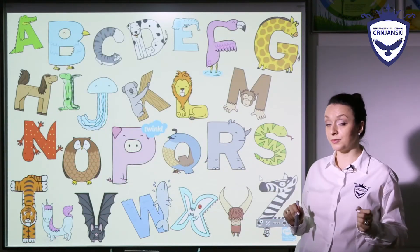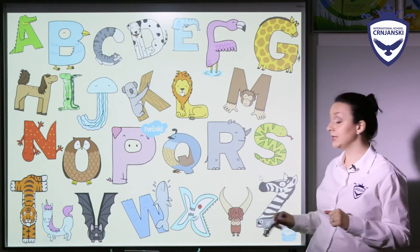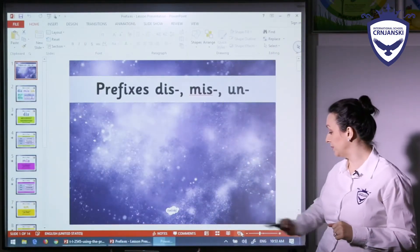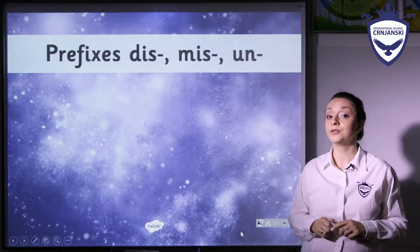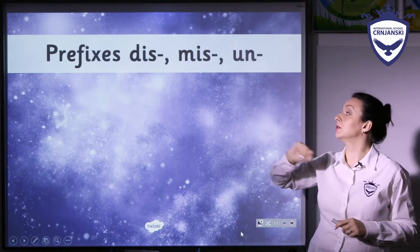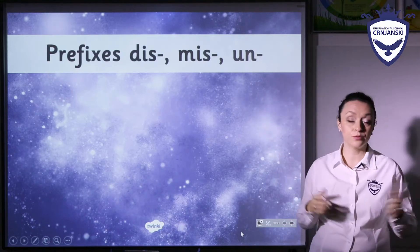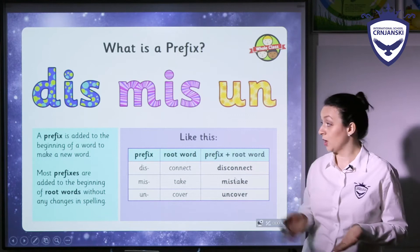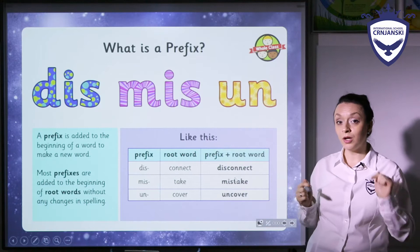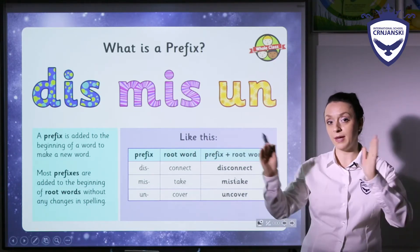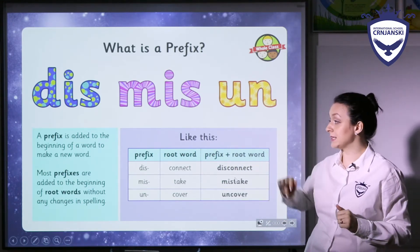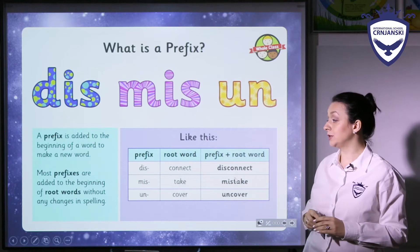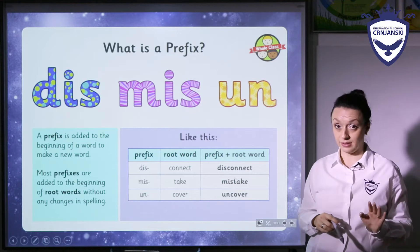So if you understood this part — the beginning of the lesson — now we are going to discuss prefixes in general. The important thing is to know which prefixes we are going to learn about. Today we learn about the prefixes dis, mis, and of course un. A prefix is added to the beginning of a word to make a new word. Most prefixes are added to the beginning of root words without any changes in spelling.